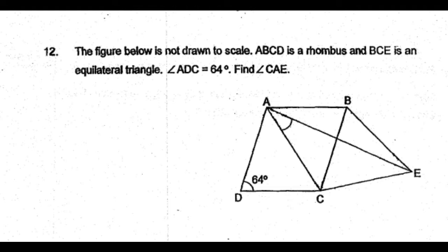Paper, this is a geometry question, question number 12. The figure below is not drawn to scale. ABCD is a rhombus and BCE is an equilateral triangle.